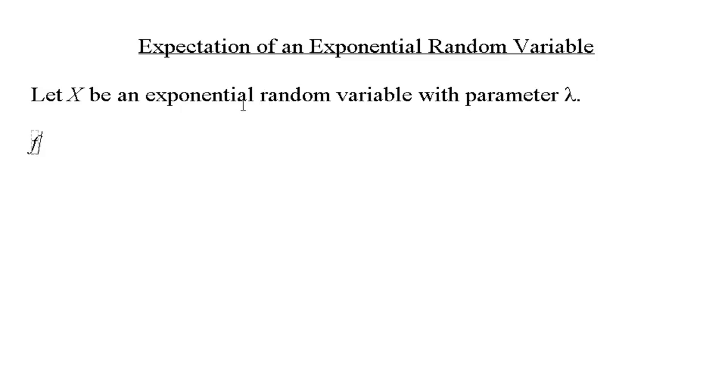So we know the PDF of an exponential random variable looks like f sub x of x equals... We have two cases here. For our first case, it's going to be equal to lambda times e to the power of minus lambda x.